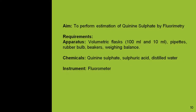Now let us see the actual practical. The aim is to perform estimation of quinine sulfate by fluorimetry. We require apparatus such as volumetric flasks of 100 ml and 10 ml capacity, pipettes, rubber bulbs, beakers, weighing balance, spatula, etc. Chemicals required are quinine sulfate, sulfuric acid, and distilled water. The instrument is obviously the digital fluorometer.